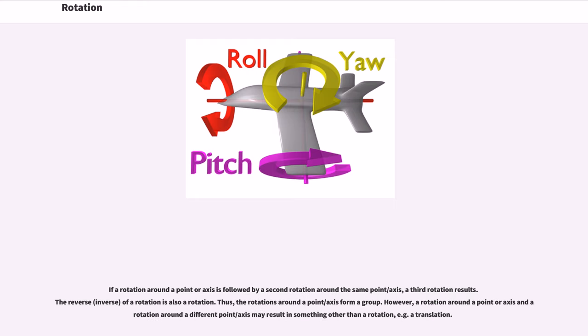If a rotation around a point or axis is followed by a second rotation around the same point or axis, a third rotation results. The reverse of a rotation is also a rotation. Thus, the rotations around a point or axis form a group. However, a rotation around a point or axis and a rotation around a different point or axis may result in something other than a rotation, for example a translation.